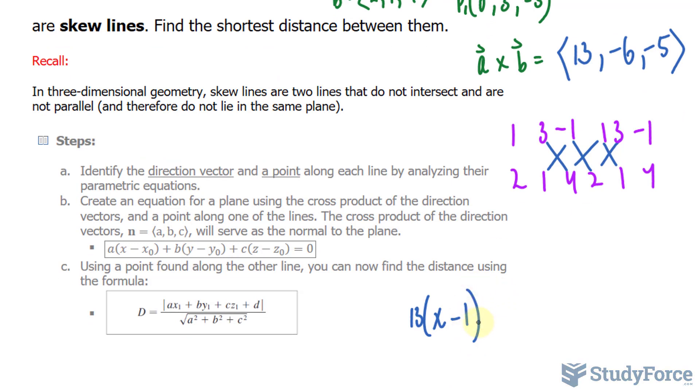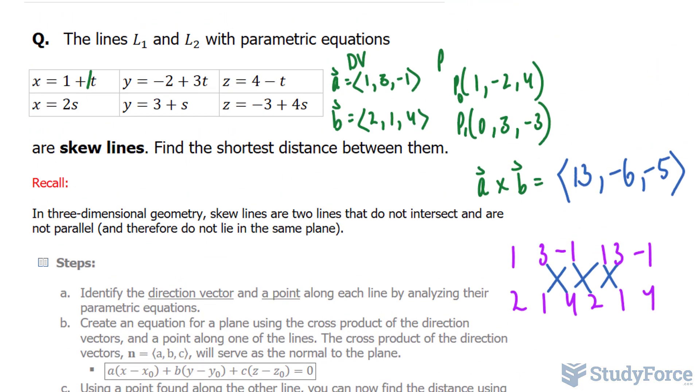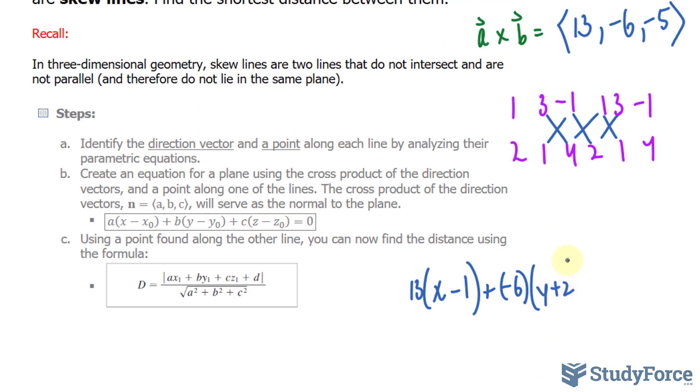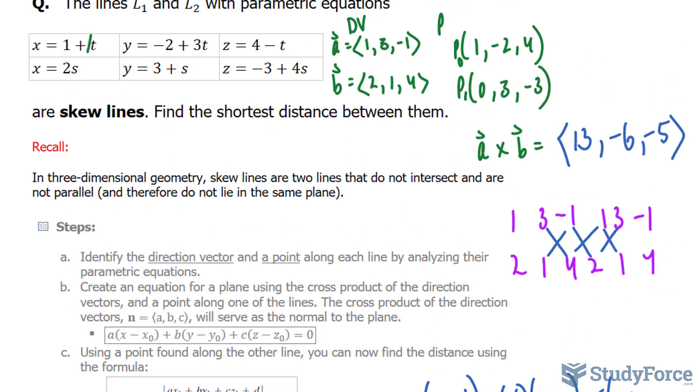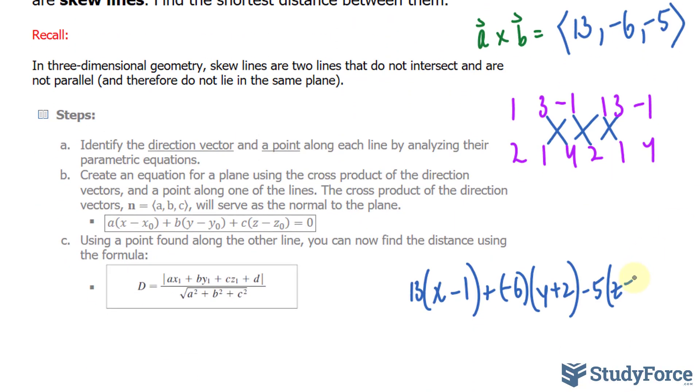Plus b is negative 6. And we have y minus negative 2, that makes it positive 2, minus 5, z minus 4. And that is equal to 0.